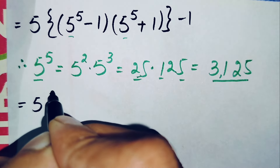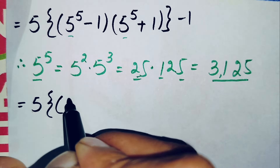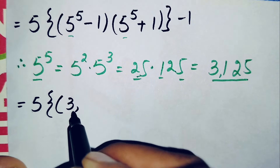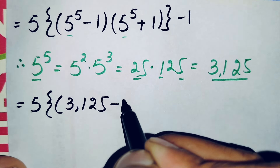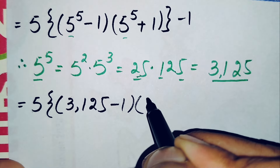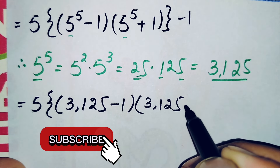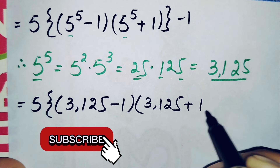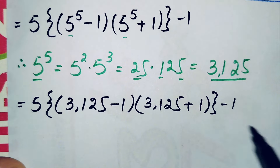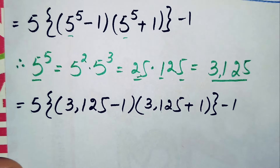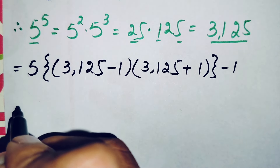We replace 5 raised to power 5 with 3125. The equation becomes 5 times the quantity 3125 minus 1 times 3125 plus 1, all inside braces, minus 1.